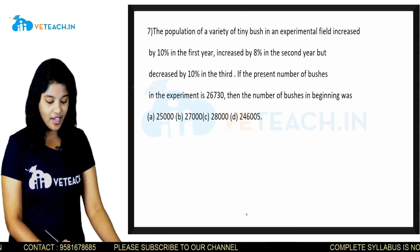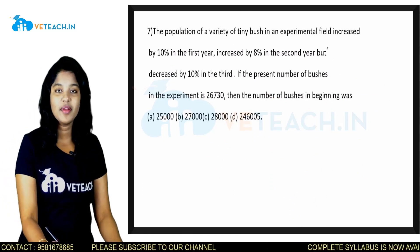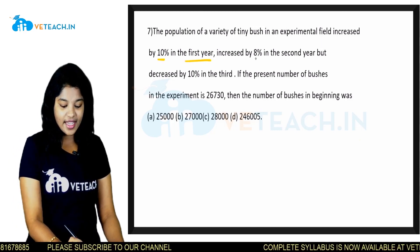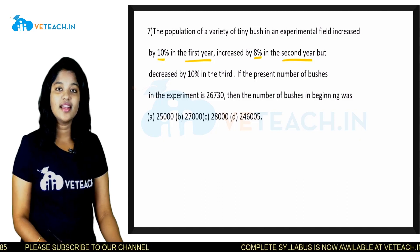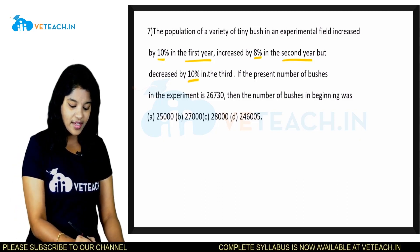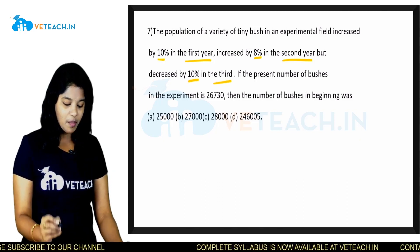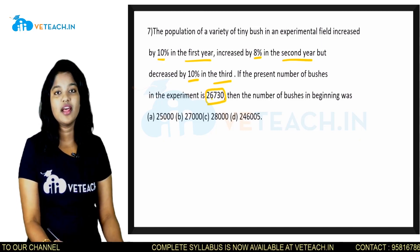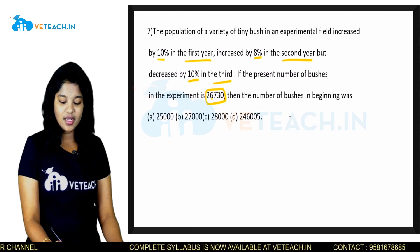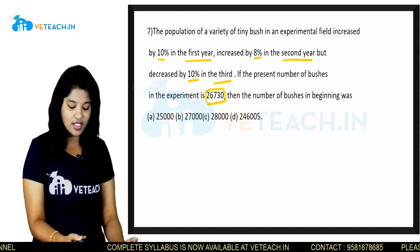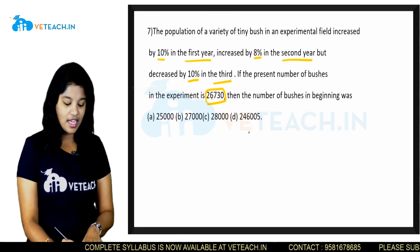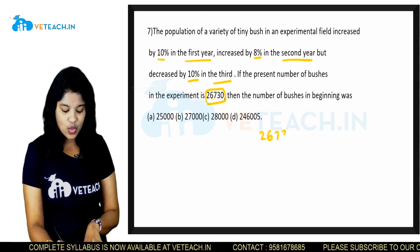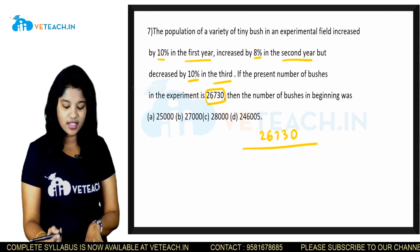The population of a variety of tiny brush in an experimental field increased by 10% in the first year, increased by 8% in the second year, but decreased by 10% in the third. If the present number of brushes in the experiment is 26,730, then the number of brushes in the beginning was — at the end of the third year, the number of brushes is 26,730.